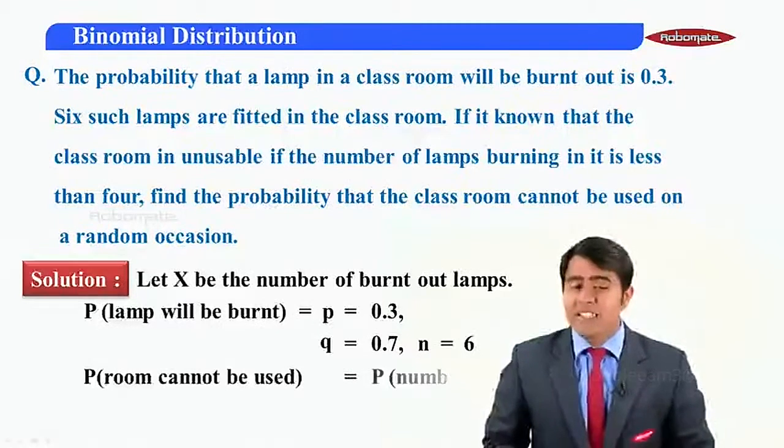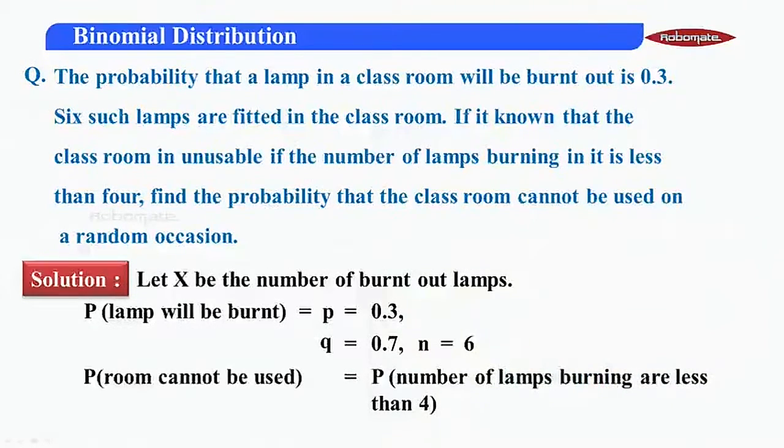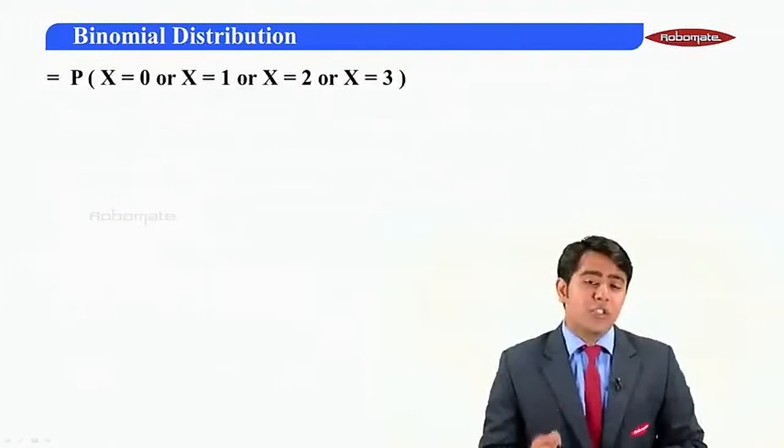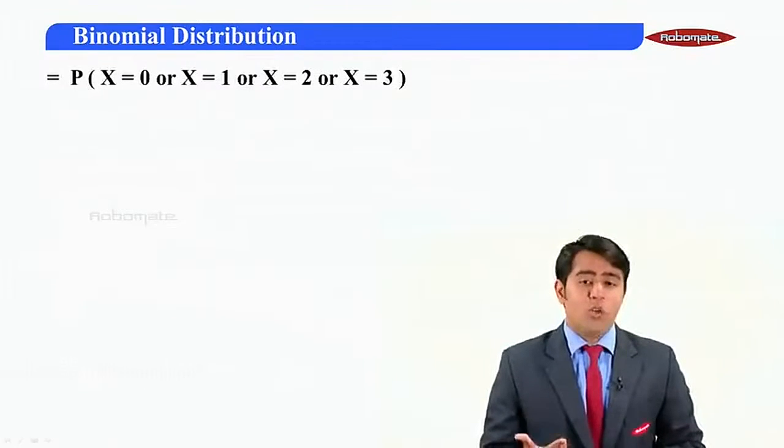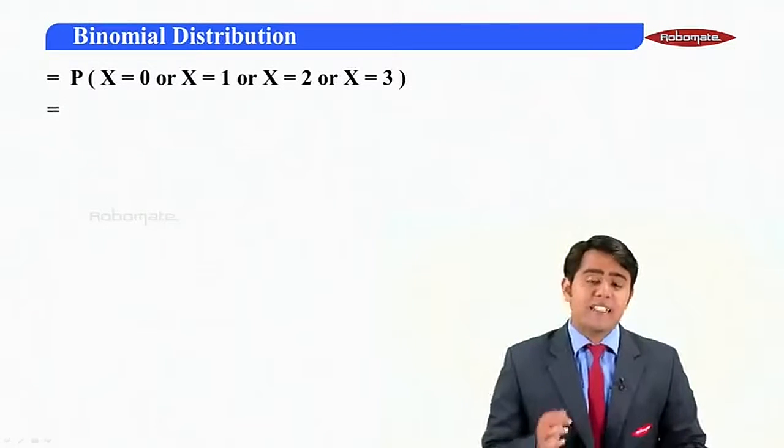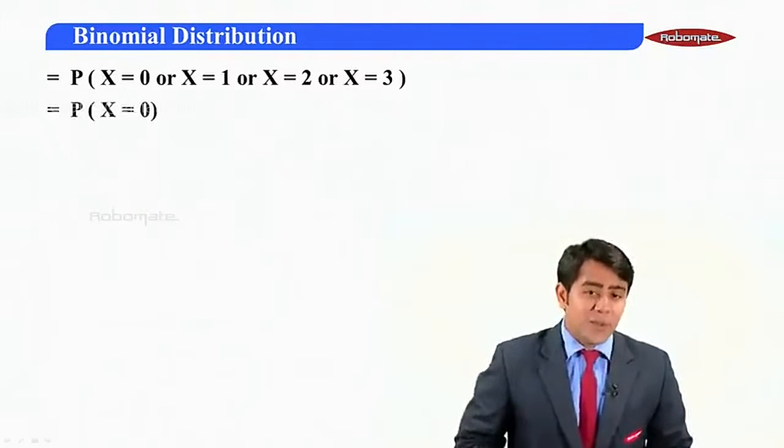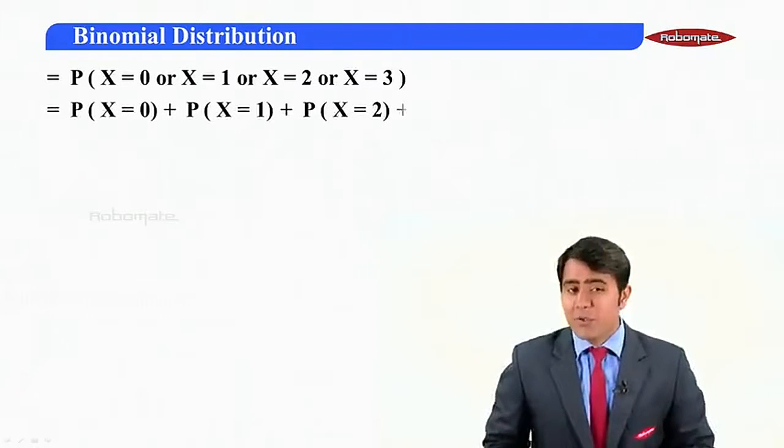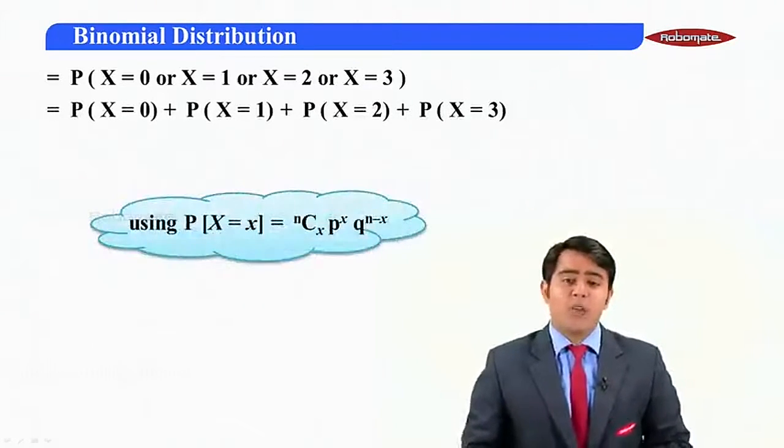So here, probability room cannot be used is equal to probability of lamps burning are less than four. So I need that P of X should be either 0 or 1 or 2 or 3. So therefore, I can say that this is nothing but P(X=0) + P(X=1) + P(X=2) + P(X=3).